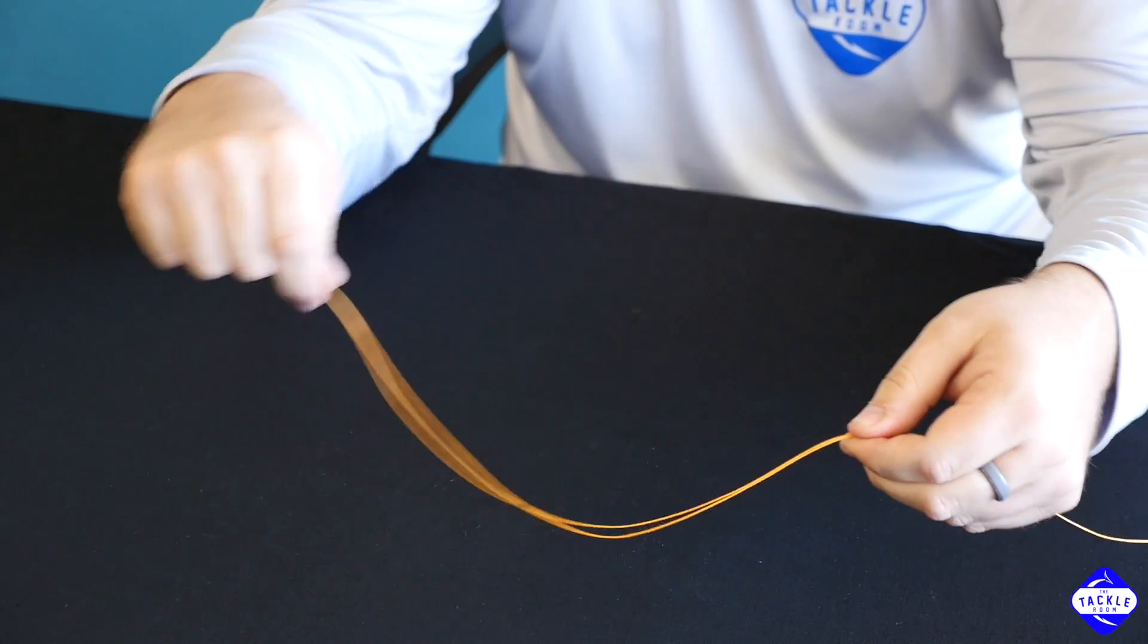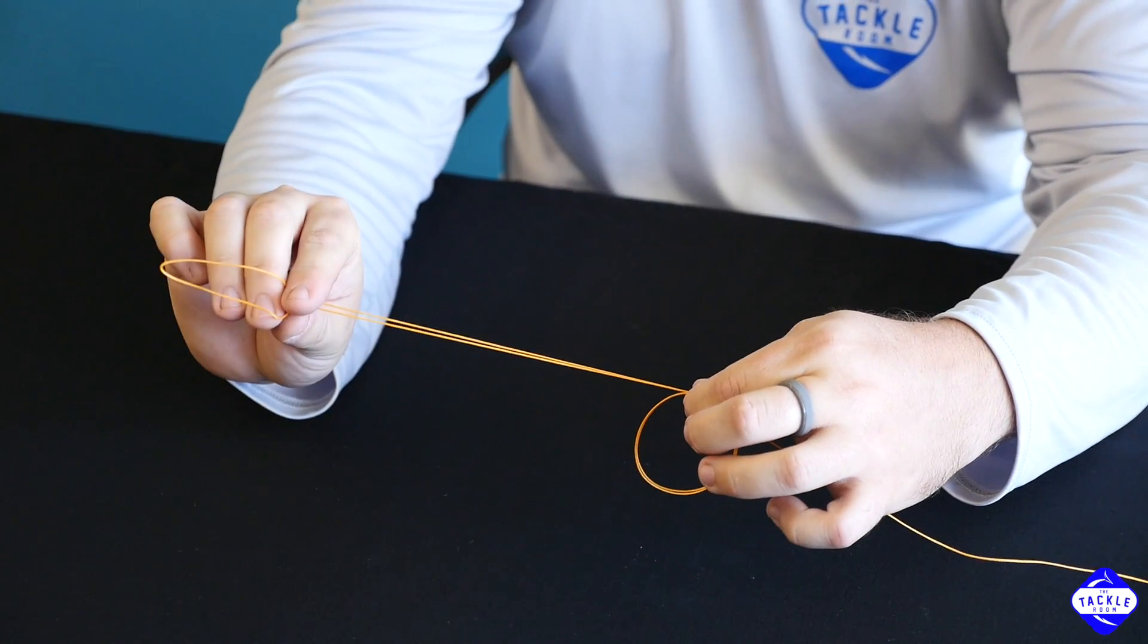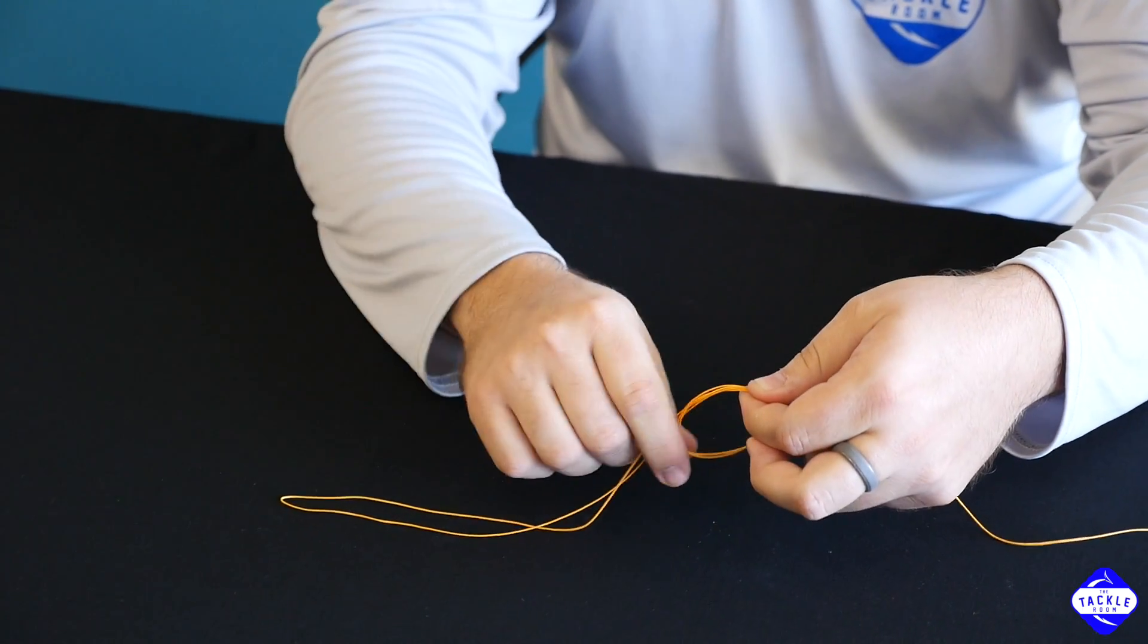After you have it pulled back, simply take both pieces and make a loop. Now we're going to take the end of this and go right through the loop three times, hence the name triple overhand knot.